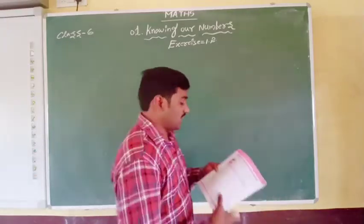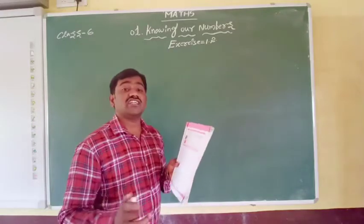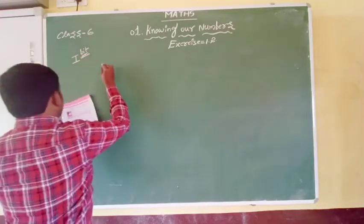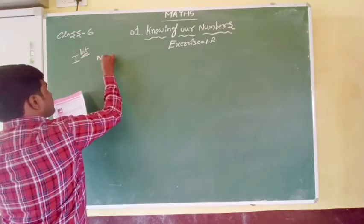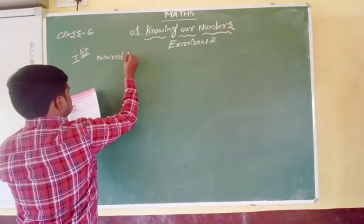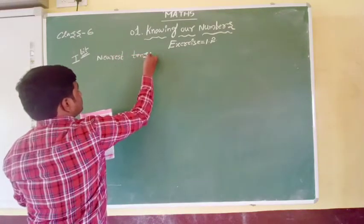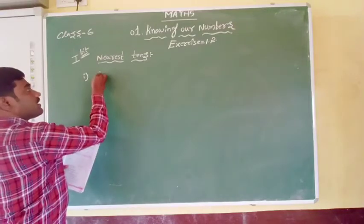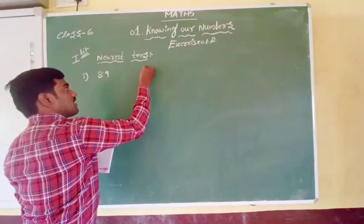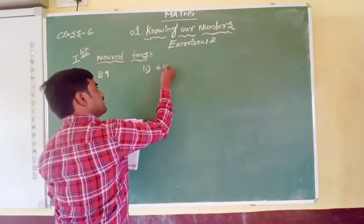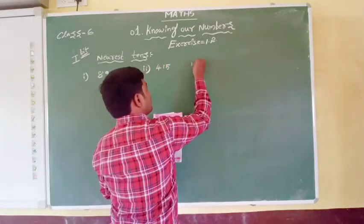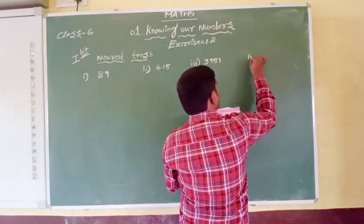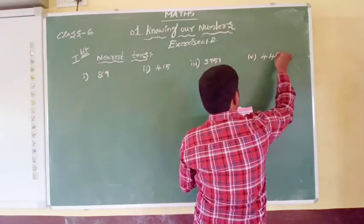The first bit is: round the following numbers to the nearest 10s. We have to round up to nearest 10s. The first question is 89, the second question is 415, the third question is 3,951, and the fourth question is 4,409.